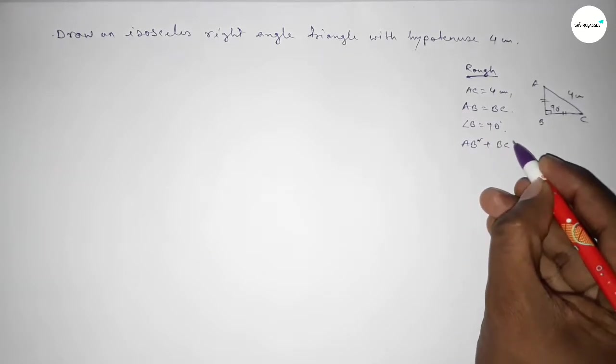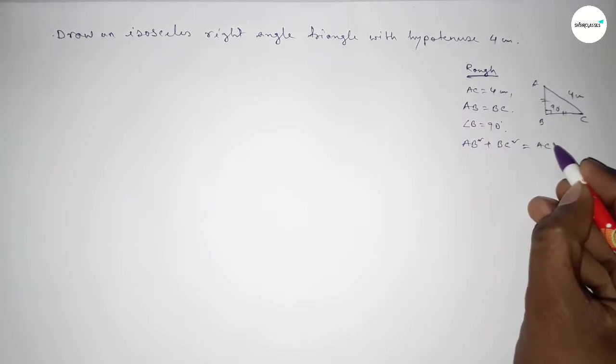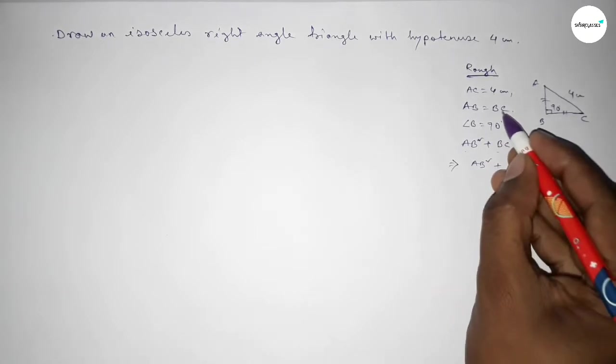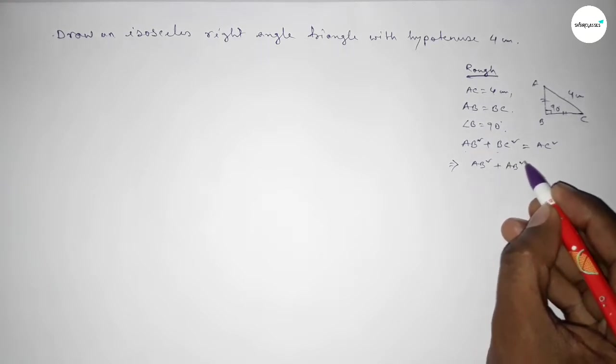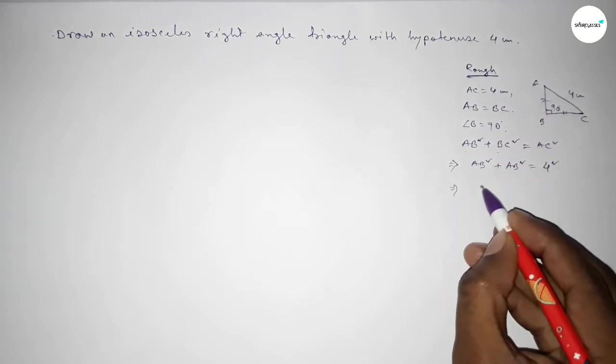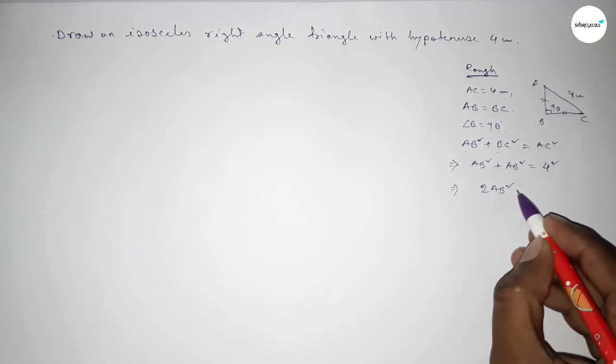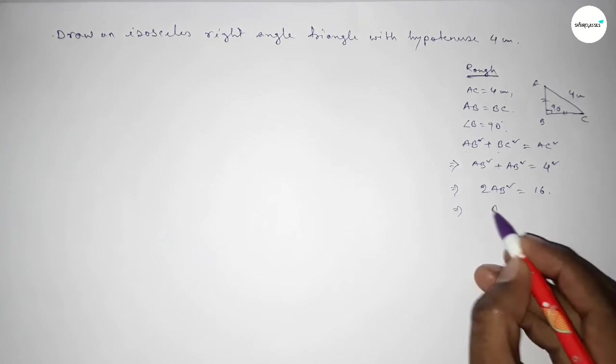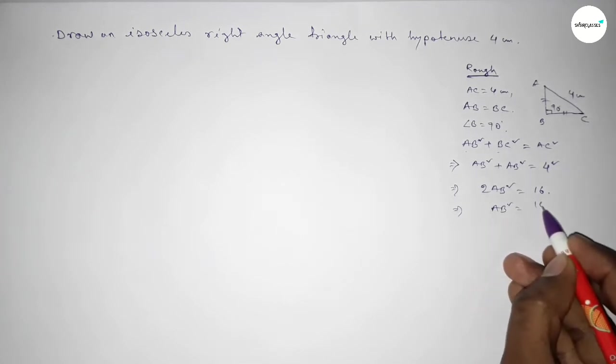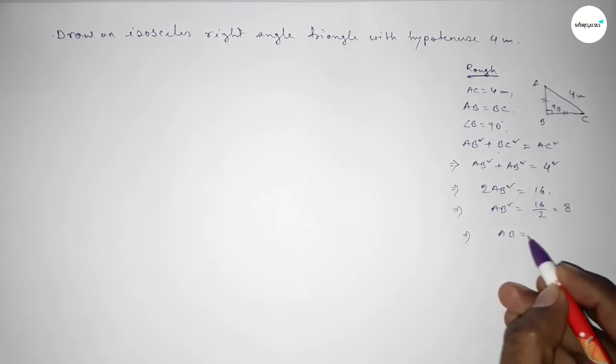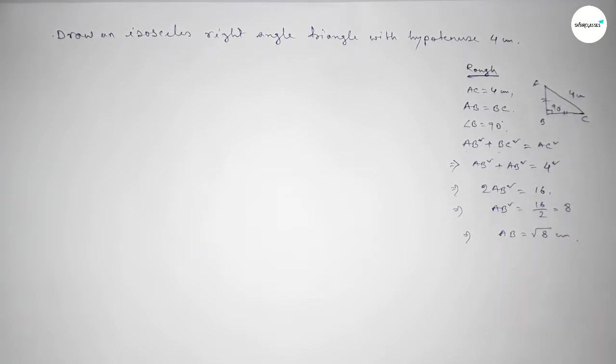So AB square plus BC square equal to AC square. AB square plus BC equal to AB, so AB square equal to this is 4 square. 2 AB square equal to 16. AB square equals 16 over 2, so this is 8.